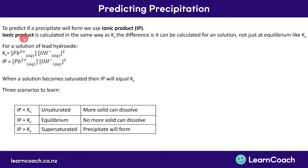For a solution of lead hydroxide, Ks equals [Pb²⁺] times [OH⁻] squared. You'll notice that IP is calculated in the exact same way. Because it's calculated the same way, you might be thinking there must be a point where IP and Ks are equal to each other — and there is.